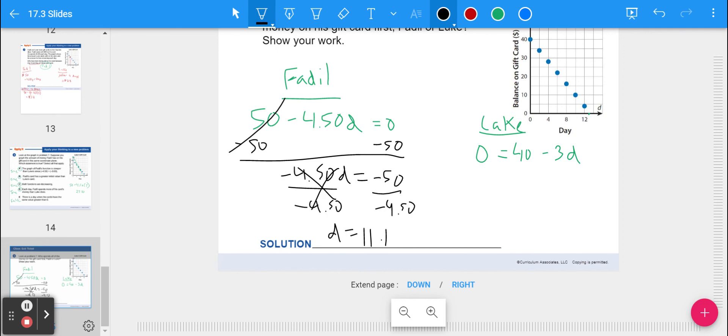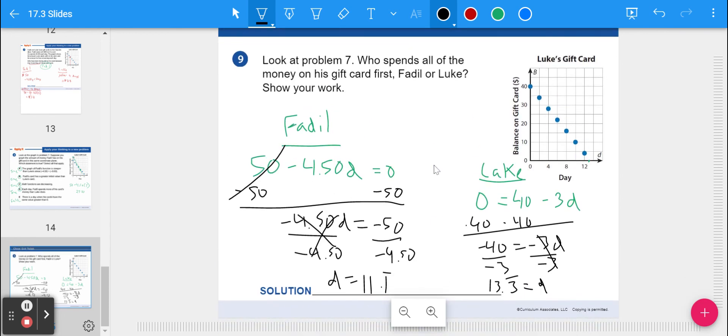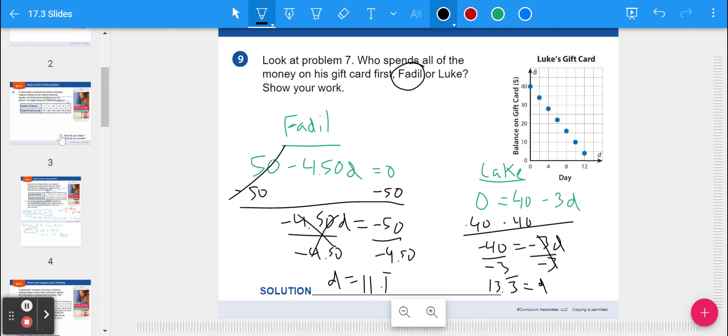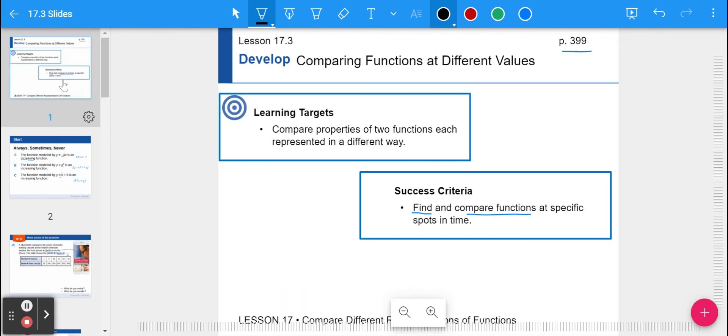Whereas Luke, if I subtract 40 because I get rid of that, negative 40 equals negative 3D divided by negative 3. It will be 0 when 40 divided by 3, which is 13.3 repeating days. So that means that Fidel's will run out faster, mainly because it's going down and spending more money each day. So that's just one example of when you can look at different spots in time and compare two functions to find, you know, compare a different way other than using just simply the rate of change or initial value. But we're still using those things.